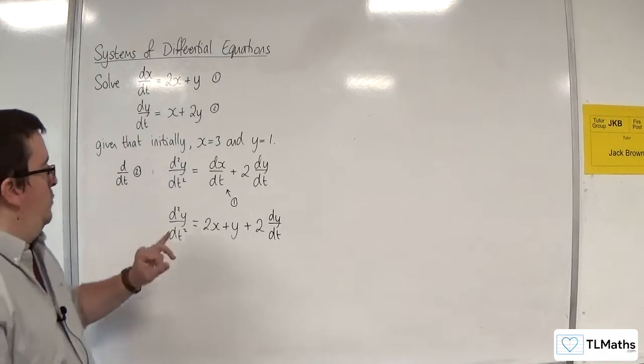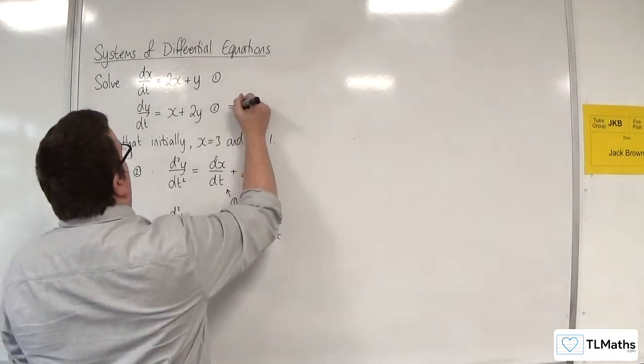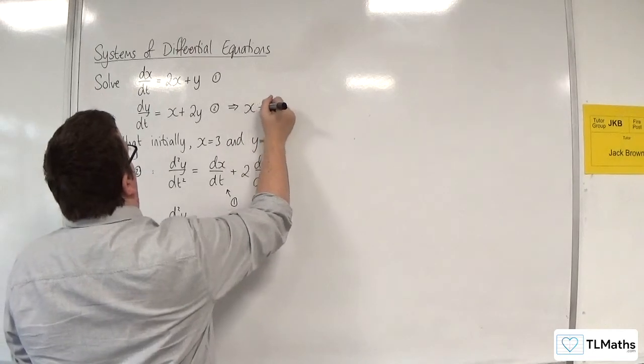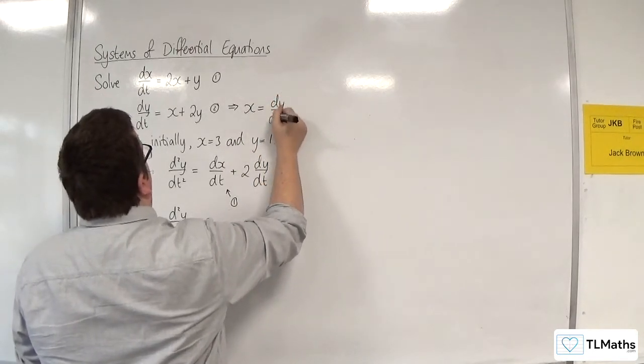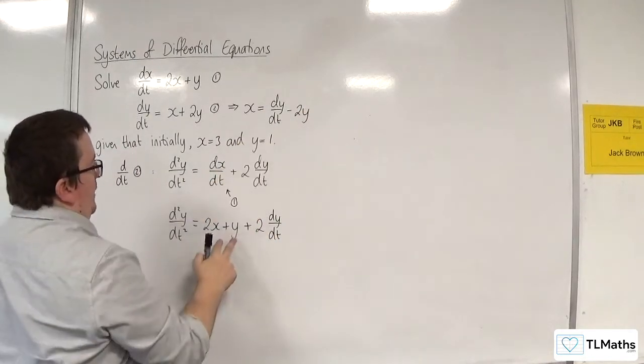Now, I've still got this x in here. So I'm going to go back to equation 2, rearrange that to get x equals dy by dt take away 2y, and replace the x with that.